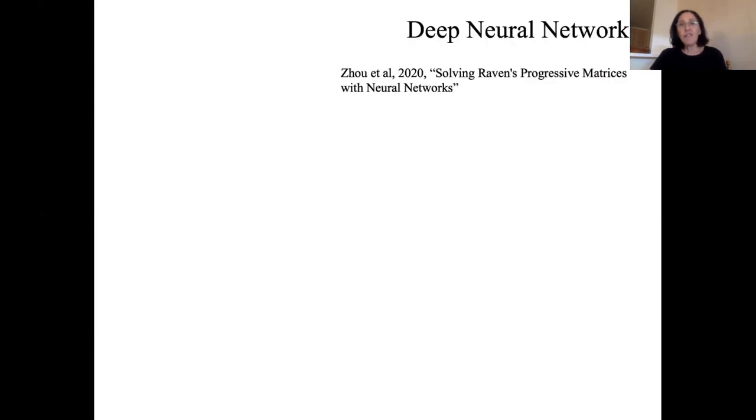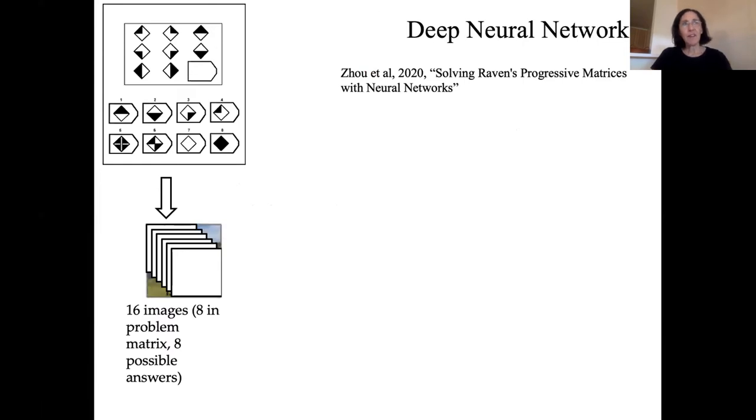A very different approach has been taken by a number of groups in the last couple of years. This paper from this year called Solving Raven's Progressive Matrices with Neural Networks is one example. The idea here is the polar opposite of the SME approach. There's no symbolic representation, everything is encoded as the weights of a neural network. The idea here is now the input is going to be 16 images, these eight images from the original matrix, and then the eight possible answers as regular bitmap images.